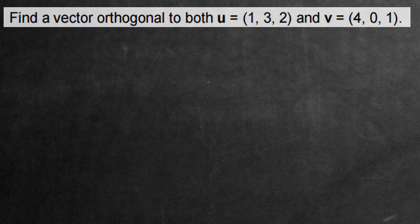Hi there, in this video we're gonna be solving the following problem. Find a vector orthogonal to both two other vectors, the vector u and the vector v.